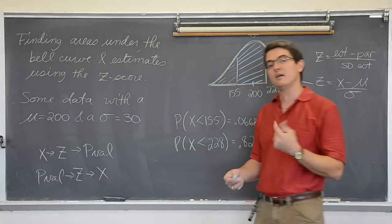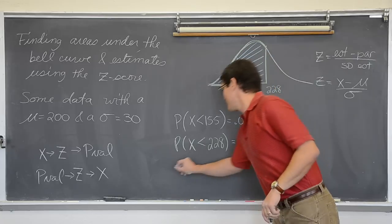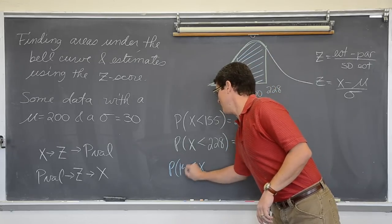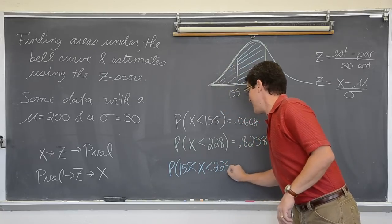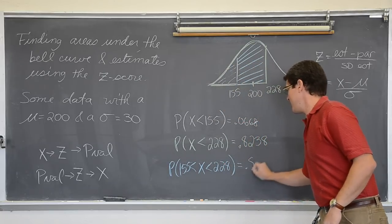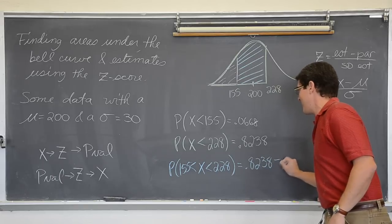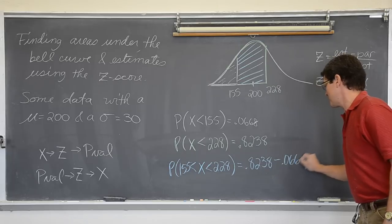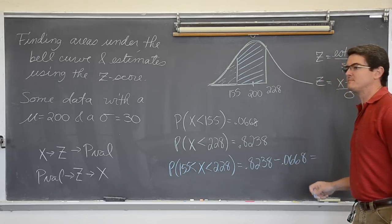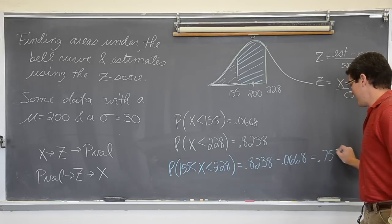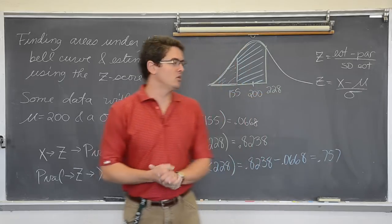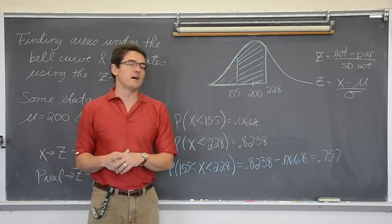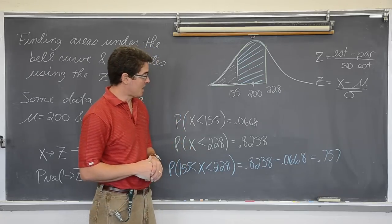So, the probability that x is between 155 and 228 is 0.8238 minus, now I am going to take out this little tail with subtraction, 0.0668. Or, that is 0.757. So, the probability of observing a value between 155 and 228 is 75.7%. Awesome.